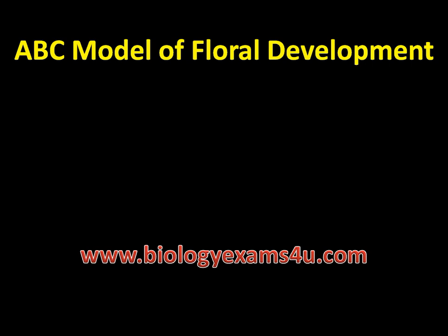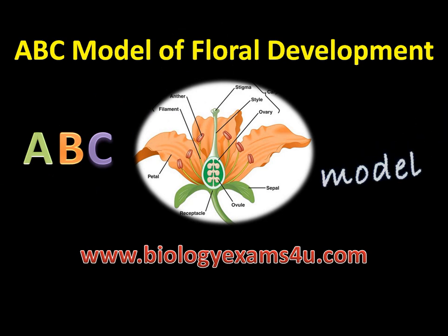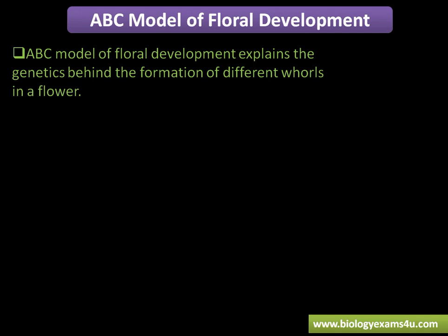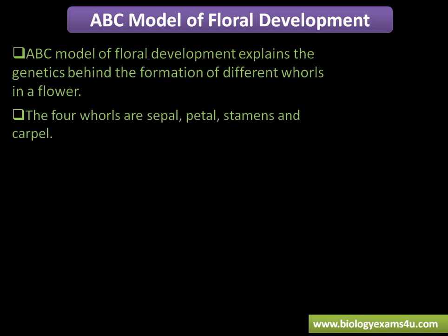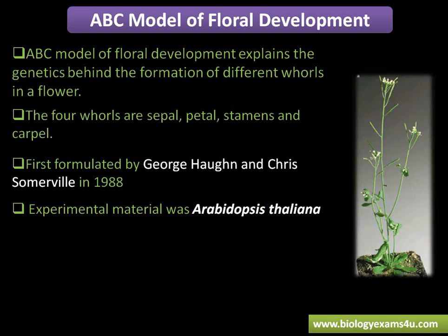Today the topic of our discussion is the ABC model of floral development, which explains the genetics behind the formation of different whorls of a flower. The four whorls are sepal, petal, stamens, and carpel. This model was first formulated by George Horne and Chris Somerville in 1988, and the experimental material was Arabidopsis thaliana. Many works were also carried out in Antirrhinum.